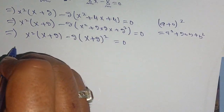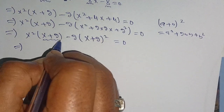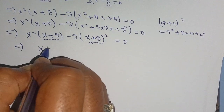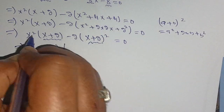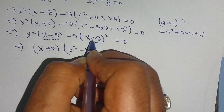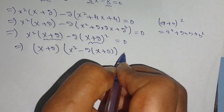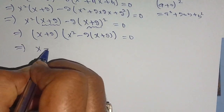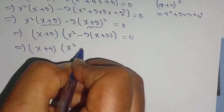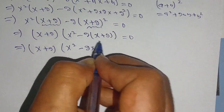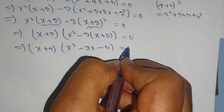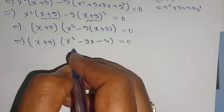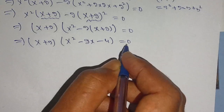Now we can take out (x plus 2) as common from both terms and we get (x plus 2) times (x squared minus 2x plus 2) is equal to 0. In the next step we can write it as (x plus 2) times (x squared minus 2x minus 4) is equal to 0. Here the first term is (x plus 2) and the second term is (x squared minus 2x minus 4).